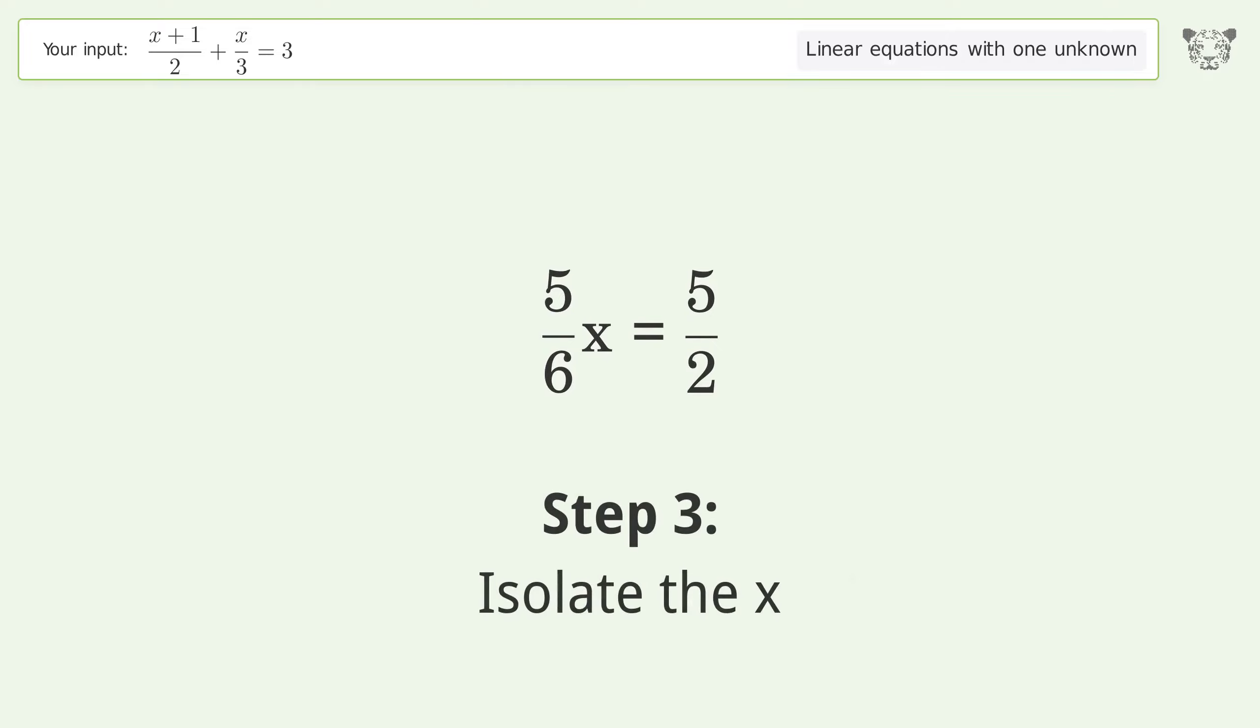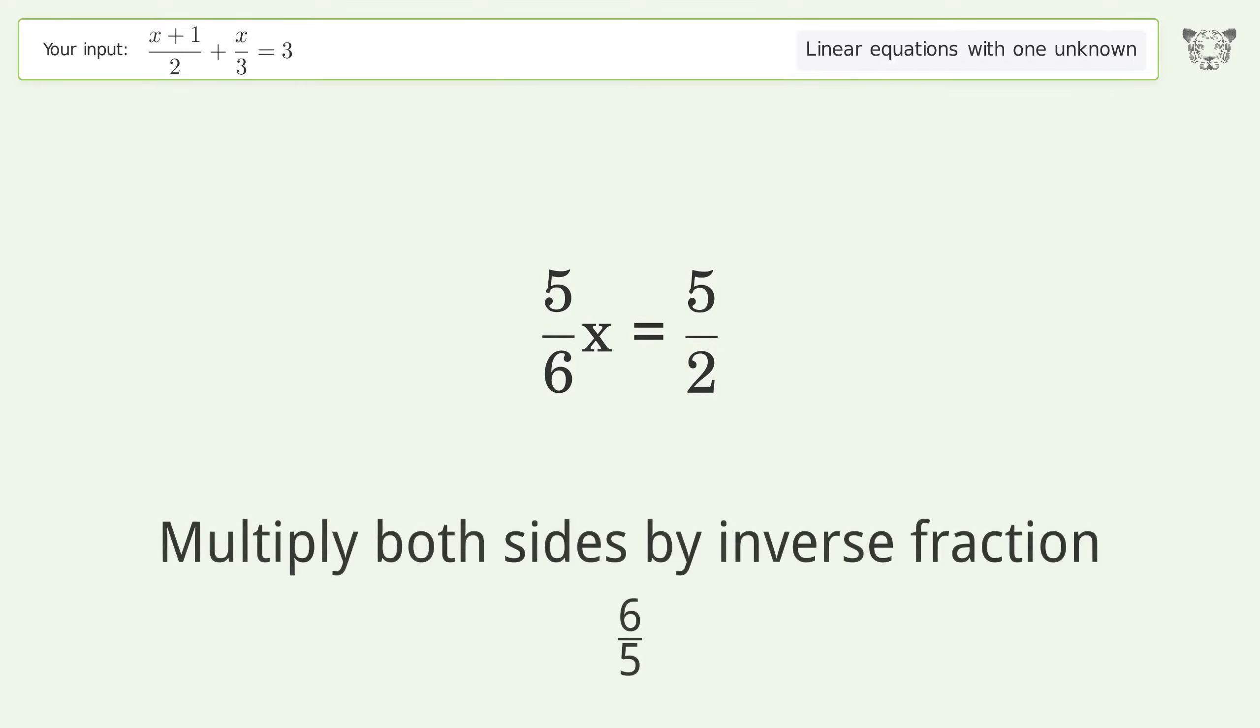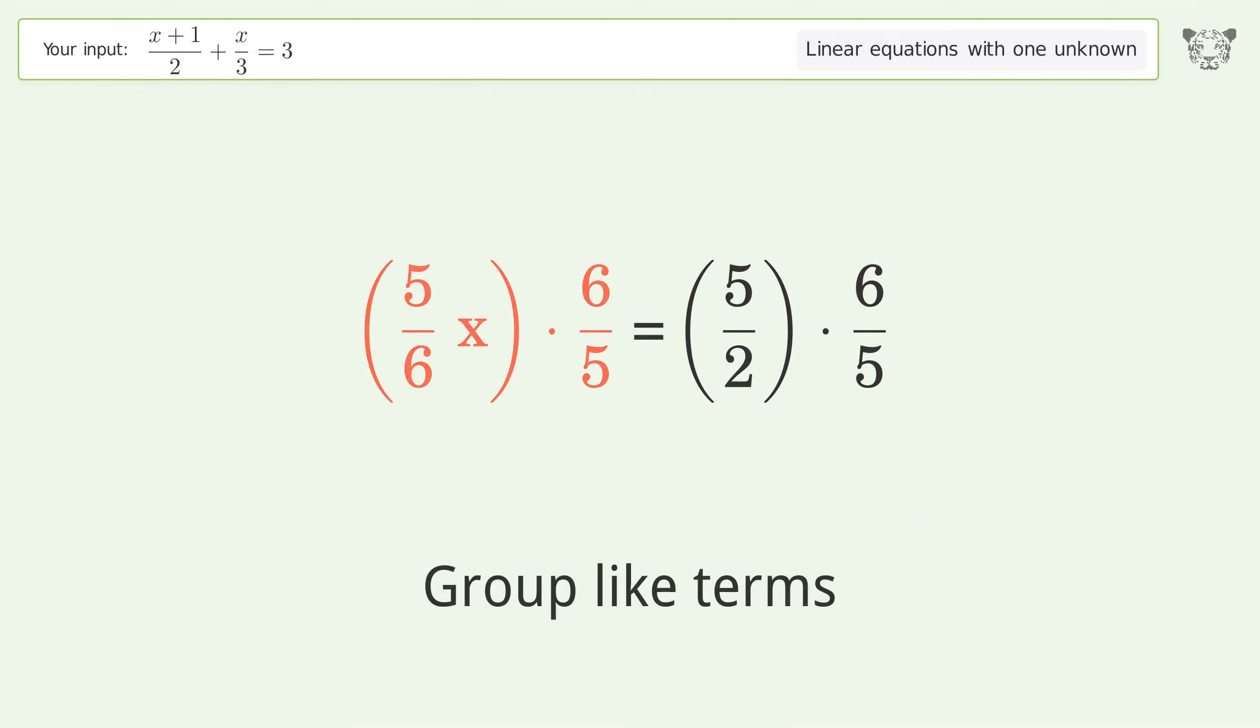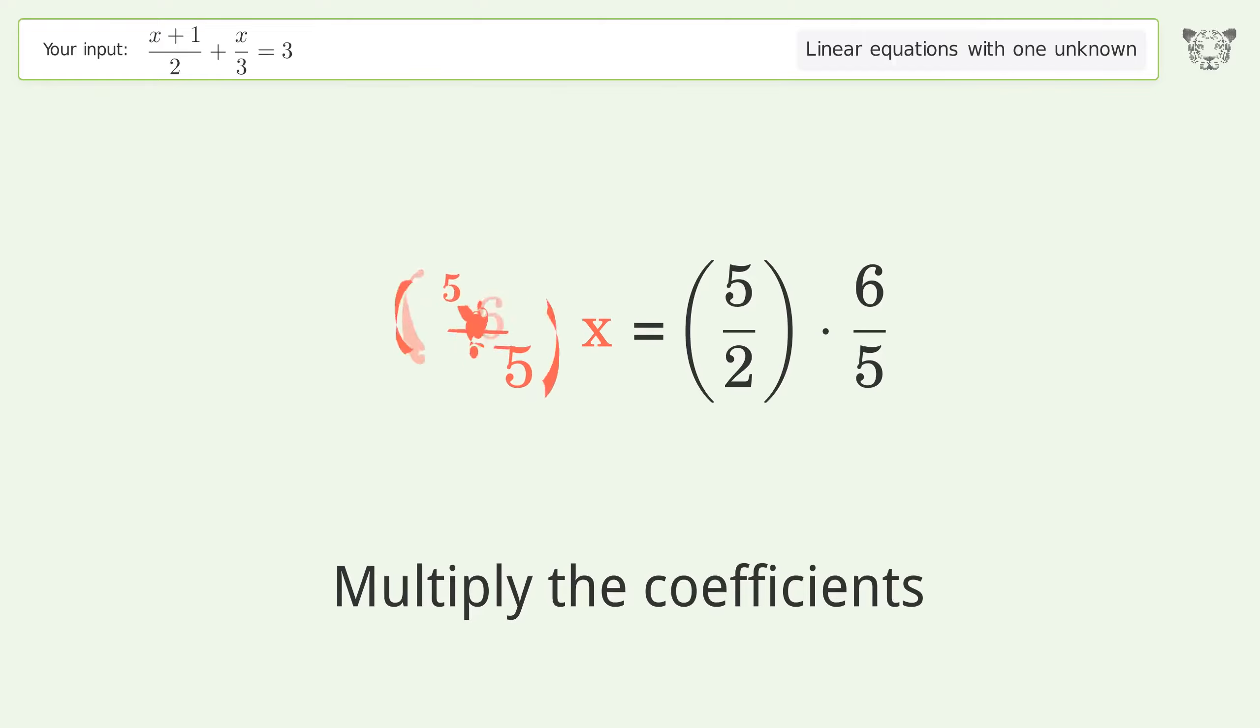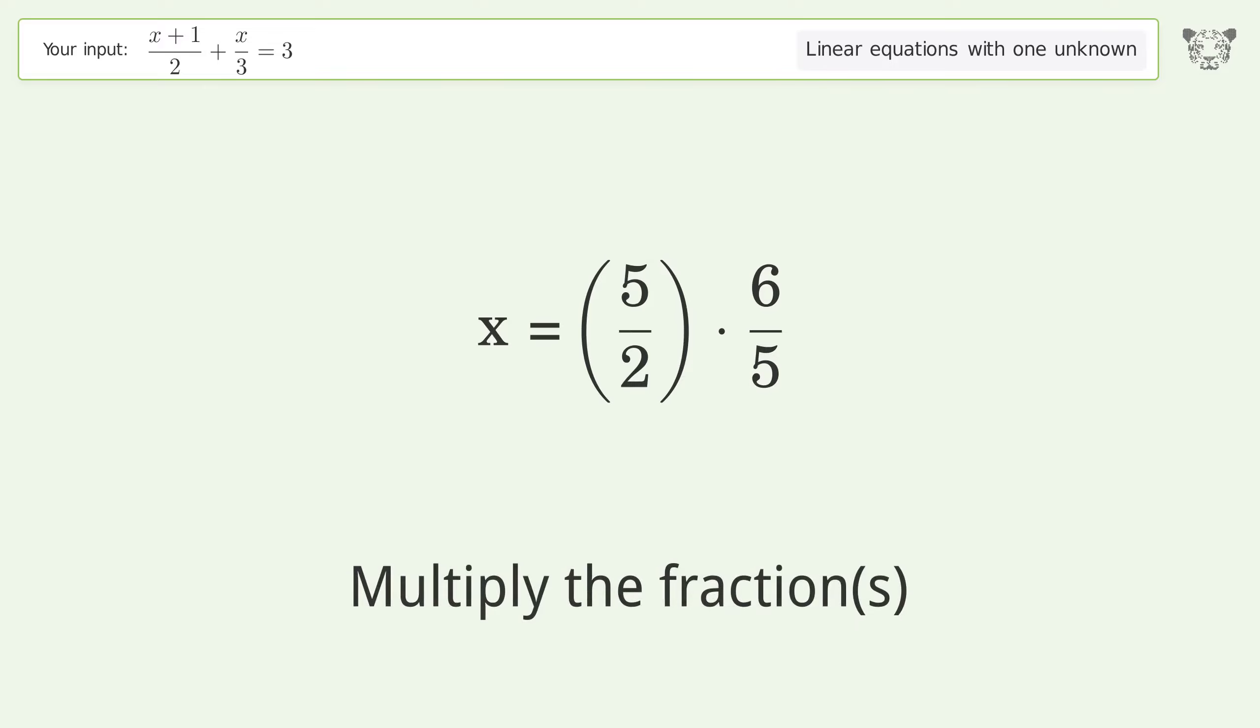Isolate the x by multiplying both sides by the inverse fraction 6 over 5. Group like terms, multiply the coefficients, and simplify the fraction. Multiply the fractions.